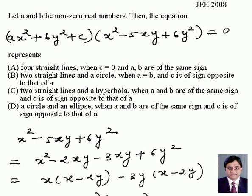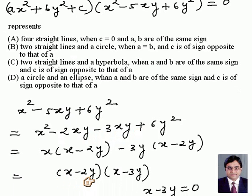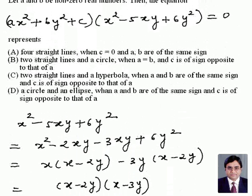This question came in Paper 1, JEE 2008. We had a fourth-degree equation and we had to tell if it represented a line, circle, ellipse, or hyperbola. First we look at the part x² - 5xy + 6y². You can factorize it and get the two factors (x - 2y)(x - 3y). Clearly these are two lines going through the origin.